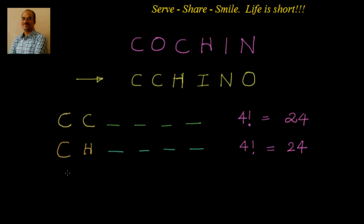Now after CH, then I have CI. CI again, I have 4 slots. CI is taken out, we have C, H, O, N. We see there are no repetitions, so again factorial 4 which is equal to 24.